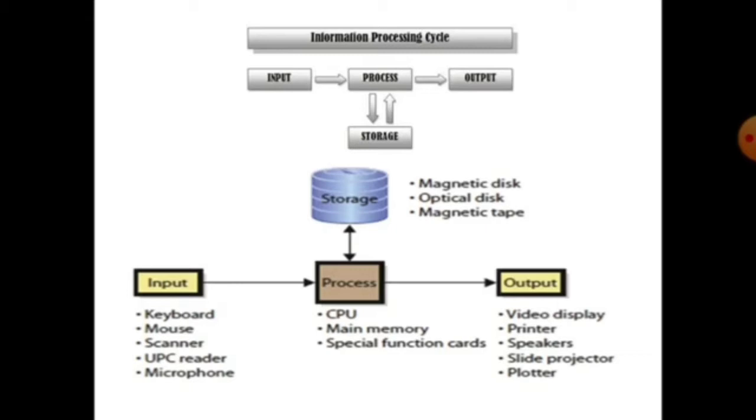Output devices are those devices which are used to give output or the information to the user. Let's take examples: window display, printer, speakers, slide projector and plotter. These are the examples of output. Not only these, we are having so many examples of output.